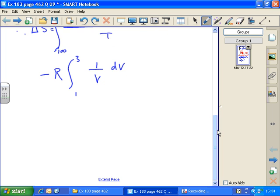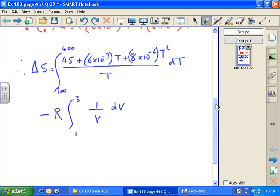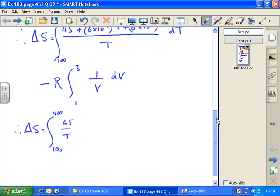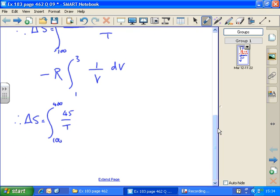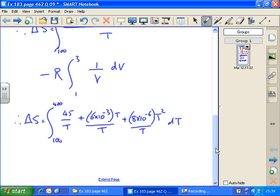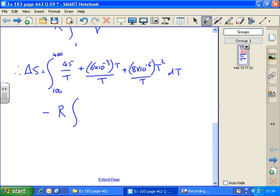Now we've got to do the integral and take it steadily one step at a time. At any point, you could stop the video and try to carry on. This first integral, I'm going to take each part of Cv and divide by T in turn. Delta S equals the integral between 100 and 400 of 45 over T with respect to T, plus 6 times 10 to the minus 3, T over T, and we can see those T's are going to cancel, plus 8 times 10 to the minus 6, T squared over T with respect to T, minus R times the integral between 1 and 3 of 1 over V dV.